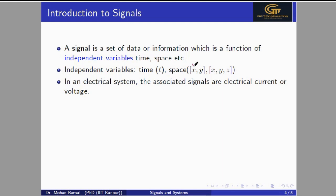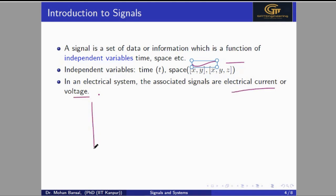Space refers to x-y coordinates or x-y-z coordinates. If a signal is a function of time, that is a one-dimensional signal. In an electrical system, the associated signals are electrical current or voltage — we usually deal with current or voltage in electrical systems.